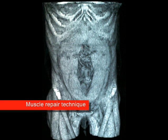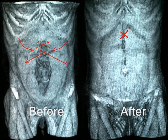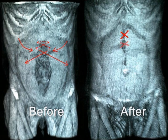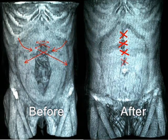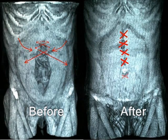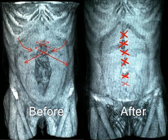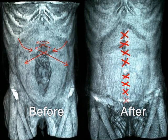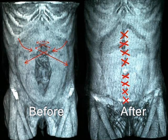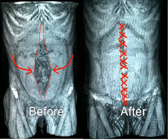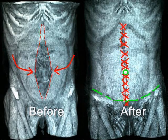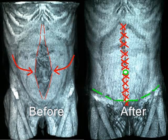The muscle repair technique is demonstrated on this patient's CAT scan with the initial stitch placed in the upper abdomen. All subsequent stitches are placed from top to bottom until the repair has been completed. Here we see the before and after results with the incisions outlined in green.